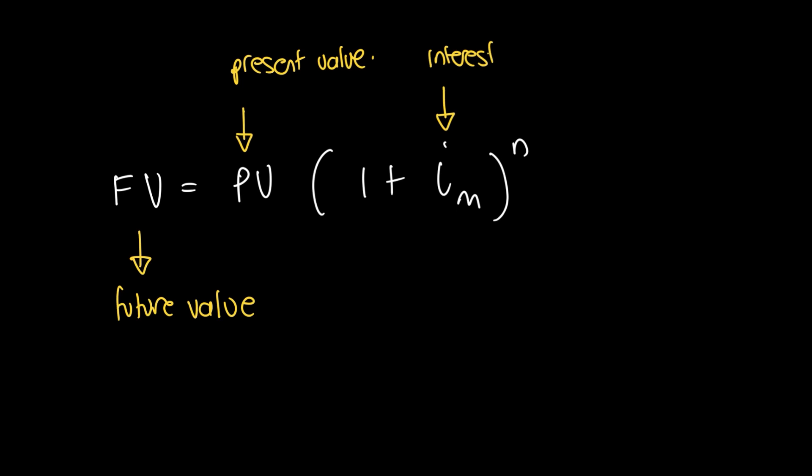The first thing we're going to do is recap the compound interest formula. Future value equals present value times 1 plus i_m to the power of n, where FV is future value, PV is the present value or principal, and i is the interest rate, the effective interest rate.